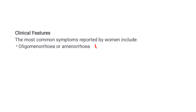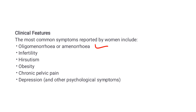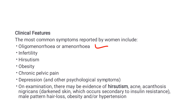The most common symptoms presented by women with PCOS include oligomenorrhea or amenorrhea, infertility, hirsutism, obesity, chronic pelvic pain, depression and other psychological symptoms. On examination there may be evidence of hirsutism, acne, acanthosis nigricans — a darkened thickened skin occurring secondary to insulin resistance — male pattern hair loss, obesity, and hypertension.